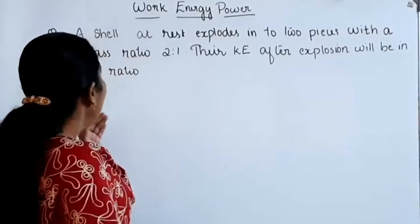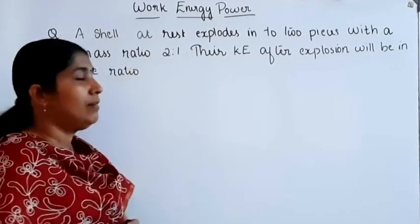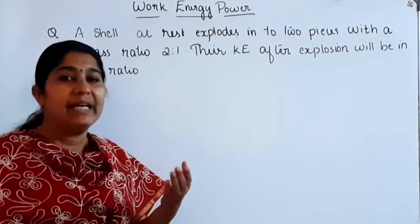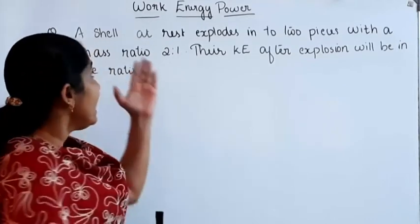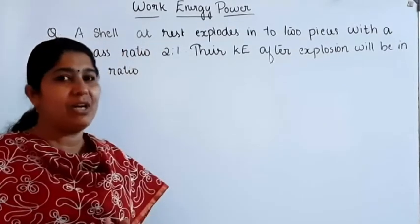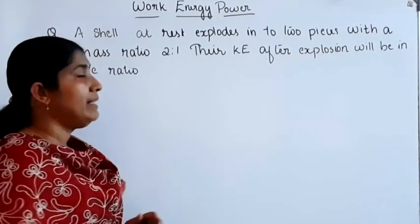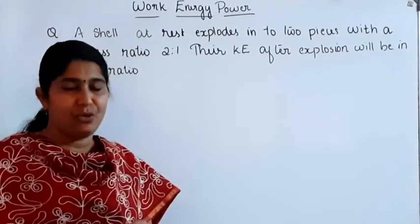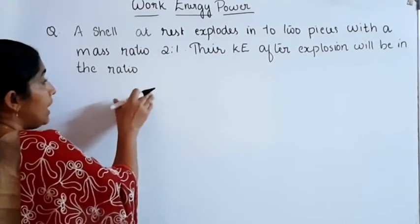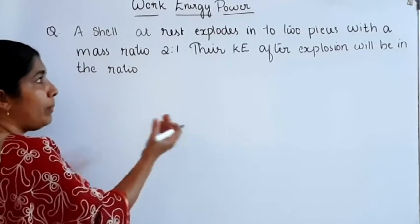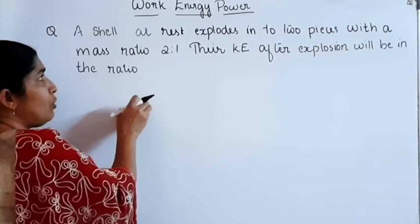Our first question: a shell at rest explodes into two pieces with mass ratio 2:1. The initial velocity of the shell is zero since it is at rest. We want to find the ratio of their kinetic energies after explosion. We can use conservation of momentum — momentum before explosion equals momentum after explosion. Since the shell is at rest, momentum before explosion is zero: 0 = M1V1 + M2V2.